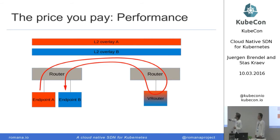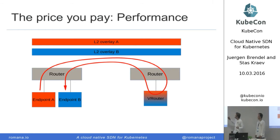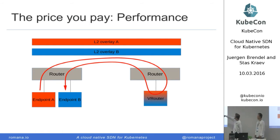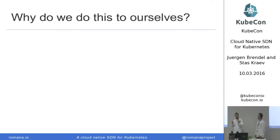This is the well-known traffic trombone that people have talked about. You have two layer-two broadcast domains stretching over some hardware, and because layer two is all local, stuff gets deployed wherever. But maybe the virtual router between these two domains is in a different data center, so your traffic takes these non-optimal paths. If this were a fully routed infrastructure, this connection would have been pretty much direct. But it wasn't. So why do we still do this to ourselves?